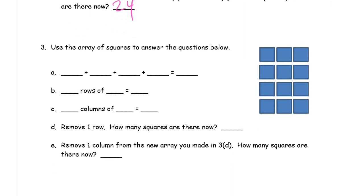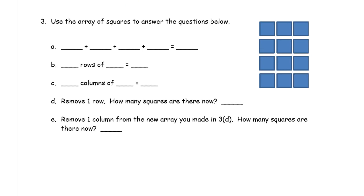Use the array of squares to answer the questions below. Well, let's see. How many addends do we have here? We have four of them. So, we're not looking at the columns because there's only three columns, but there are four rows.